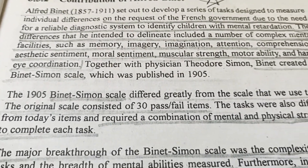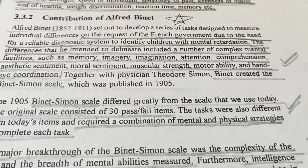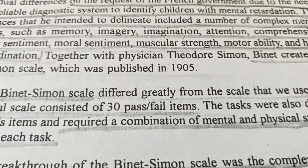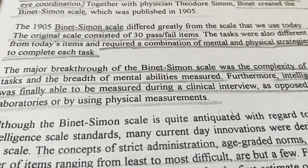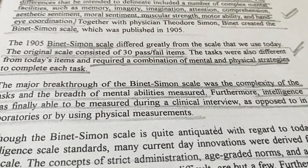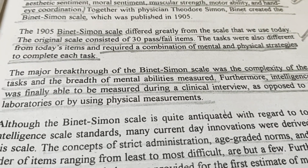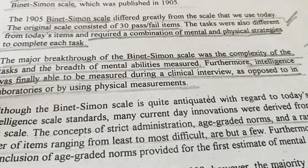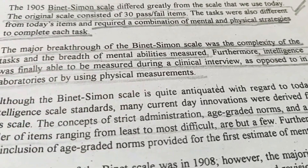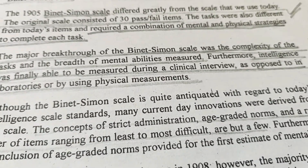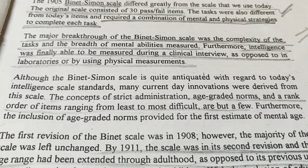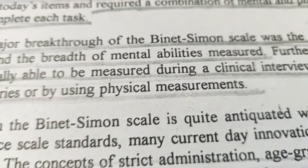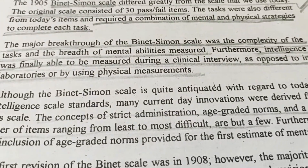Binet worked with Simon to create the Binet-Simon Scale, which was made in 1905. The original scale had only 30 pass/fail items — yes or no type questions. A major breakthrough of the Binet-Simon Scale was that very complex tasks were included and it checked the breadth of mental abilities, meaning the long range of abilities present in intelligence.